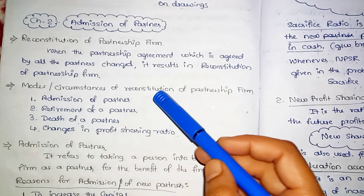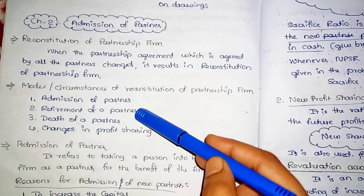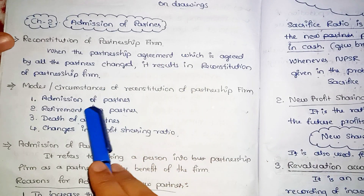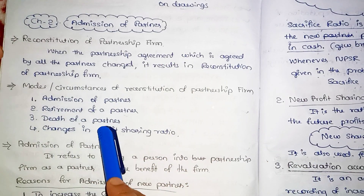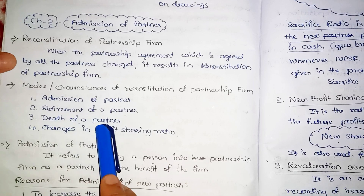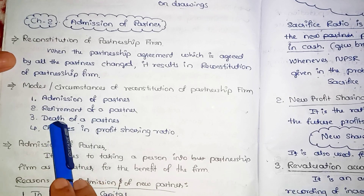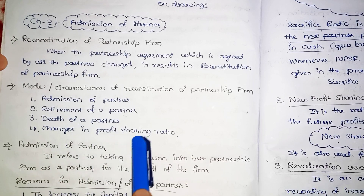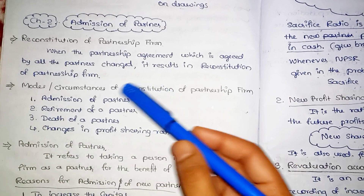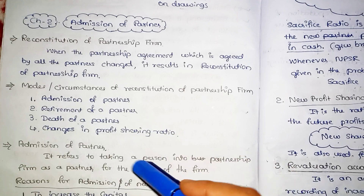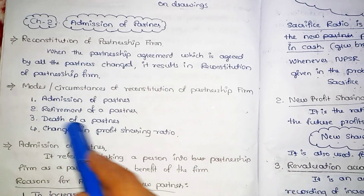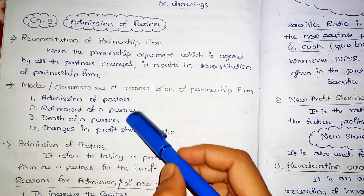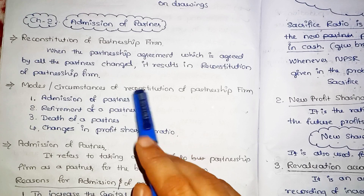Reconstitution - there are four circumstances: admission of a partner, retirement of a partner, death of a partner, and changes in profit sharing ratio. This is important for multiple choice questions - reconstitution.